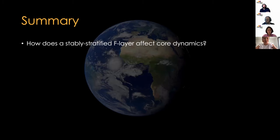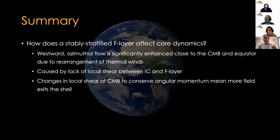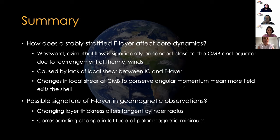So in summary, we've looked at how a stably stratified F-layer might affect core dynamics. And what we see is strong westward azimuthal flows that are particularly enhanced close to the CMB and equator due to the rearrangement of thermal winds. And this is caused by the lack of local shear between the inner core and the F-layer. And this then through angular momentum conservation changes the local shear at the CMB, which means that more field can exit the fluid shell. And would it be possible to see a signature of the F-layer in geomagnetic observations? Well, I've tried to probe this by changing the F-layer thickness and see its effect on which effectively changes the tangent cylinder radius. And then therefore trying to see if there's a corresponding change in the latitude of the polar magnetic minimum. So I think I'd like to wrap up here and thank you for your attention and I'd be happy to answer any questions.